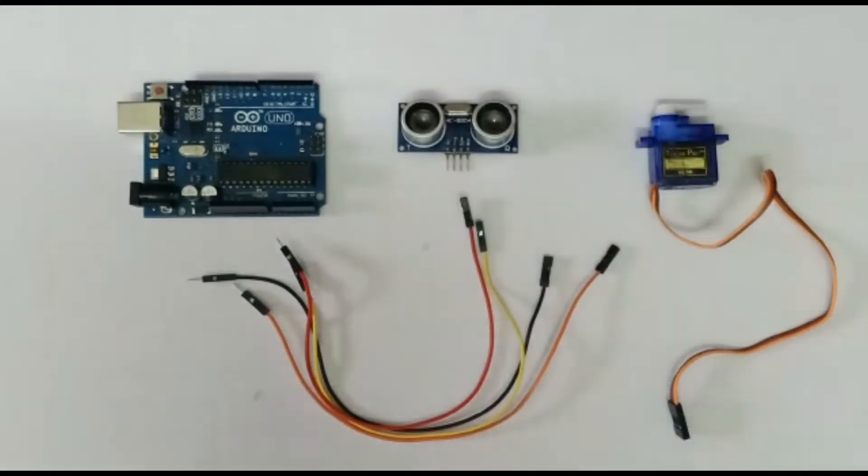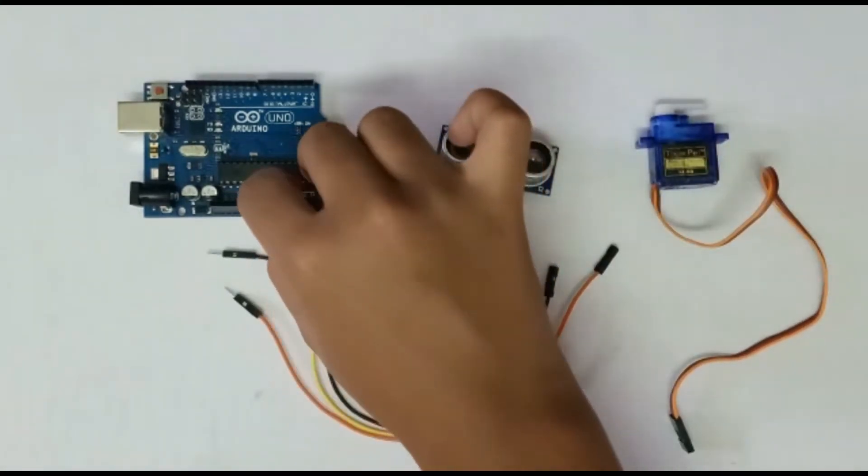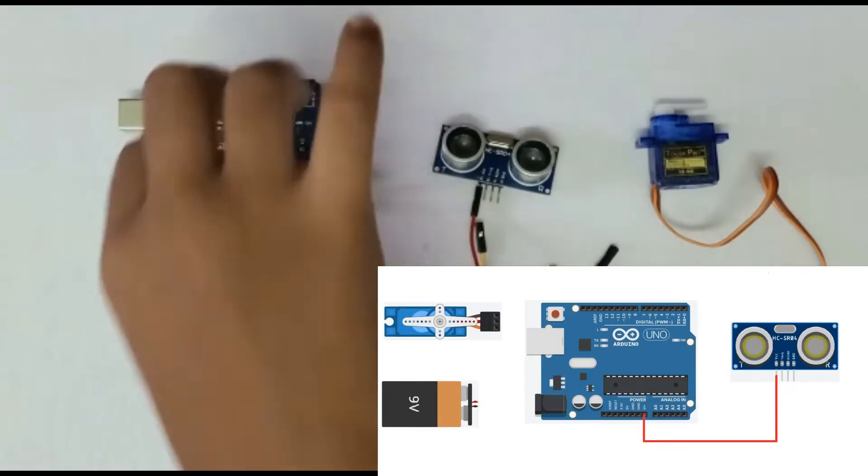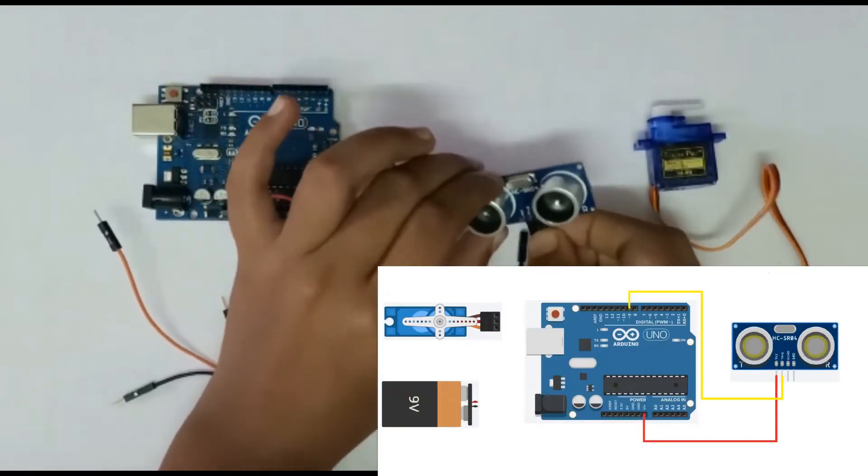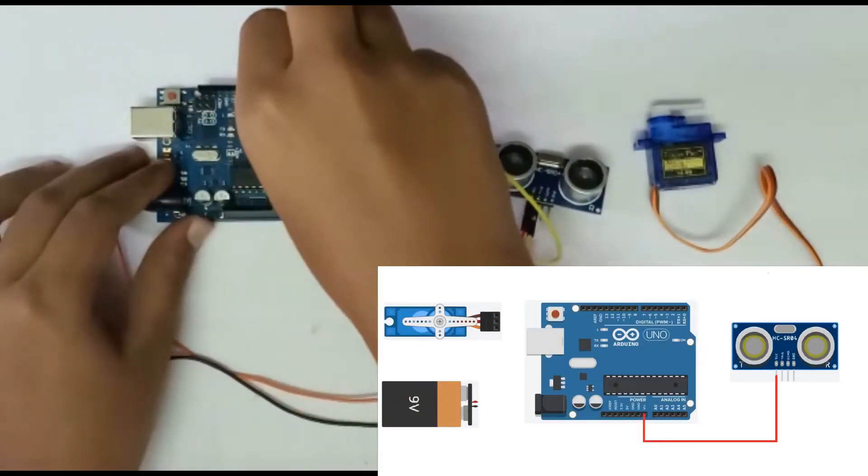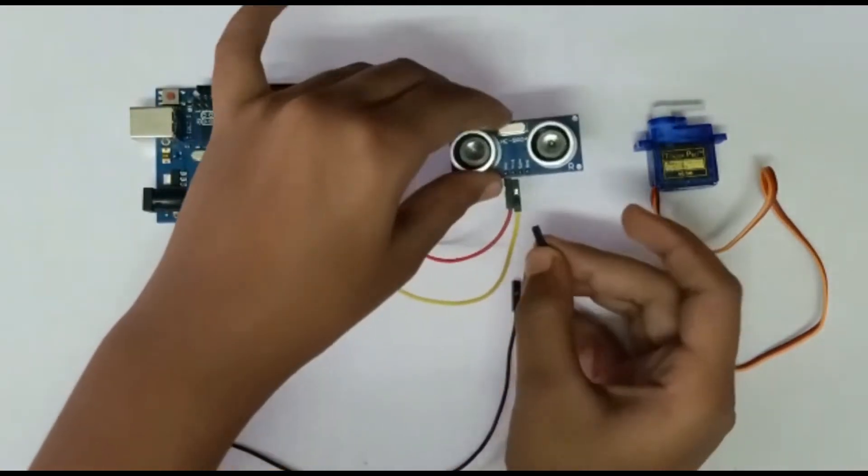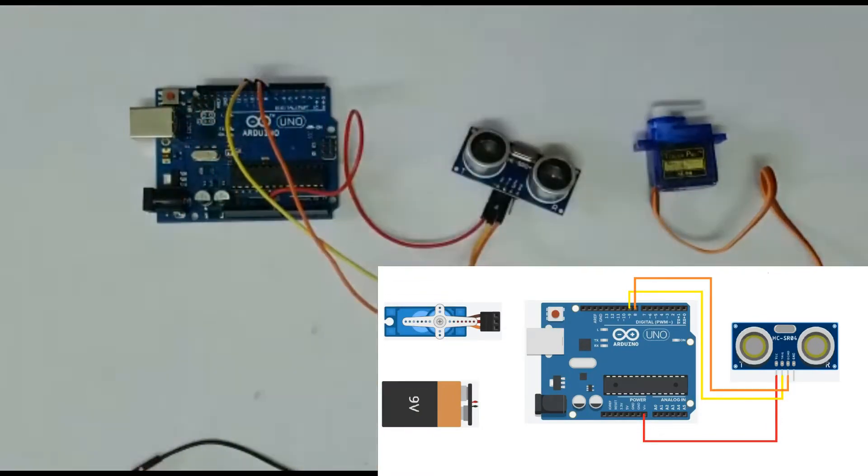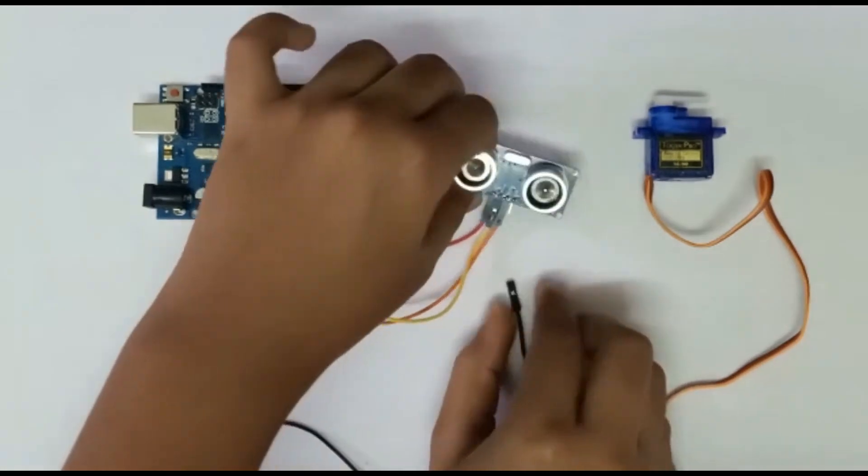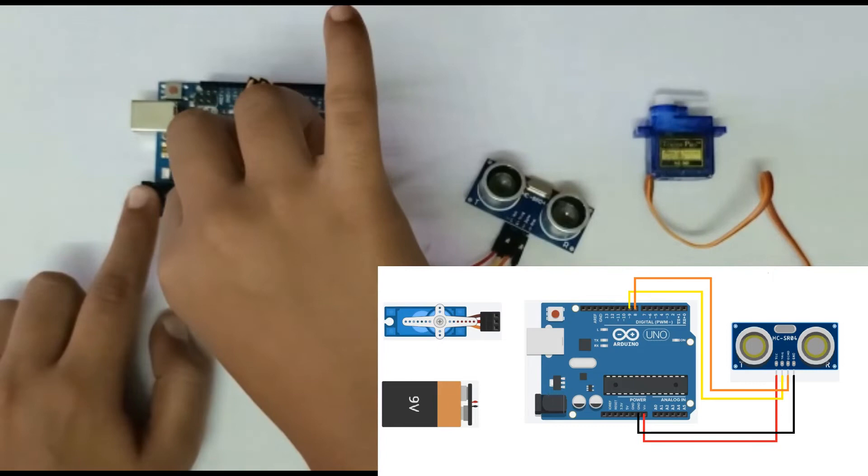Let's start to assemble the circuit. Now take a wire and put it in the VCC pin in the ultrasonic sensor and put that wire to the 5V pin in the Arduino board. Take another wire and put it in the Trig pin in the ultrasonic sensor, put that wire in the 9-pin in the Arduino board. Take a wire and put it in the Echo pin in the ultrasonic sensor and put that wire in the 8-pin in the Arduino board. Now take another wire and put it in the GND pin in the ultrasonic sensor and put that wire to the GND pin in the Arduino board.